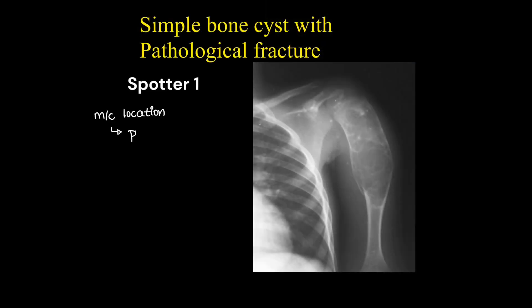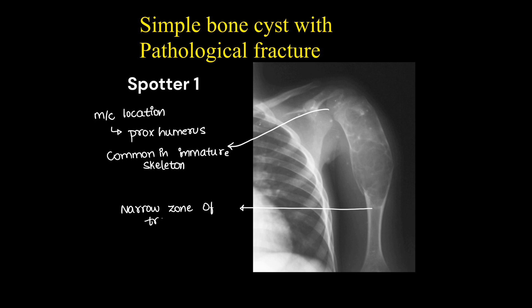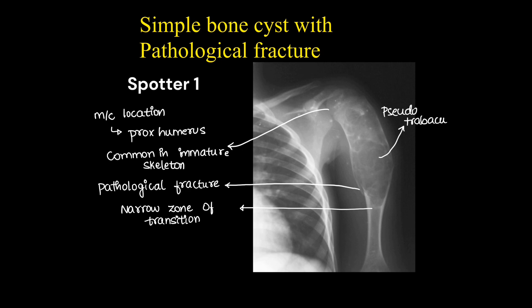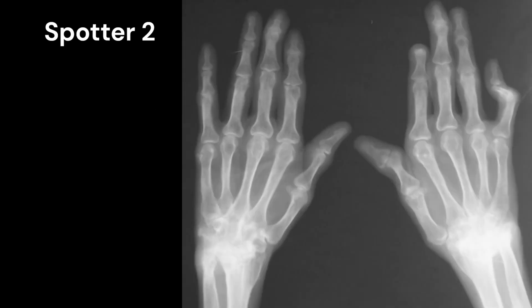This was a case of simple bone cyst with a pathological fracture. The most common location is the proximal humerus, as shown in the picture. It is common in immature skeletal. There is a narrow zone of transition for this lytic lesion. Here you can see the pathological fracture and pseudotrabeculations. There will be no periosteal reaction.